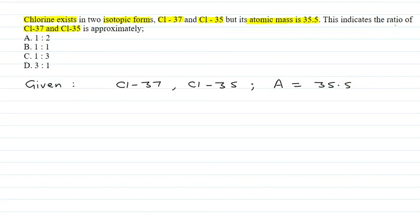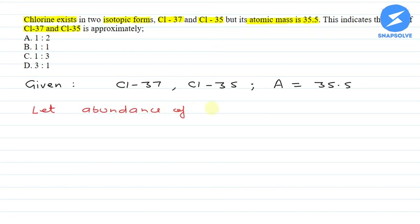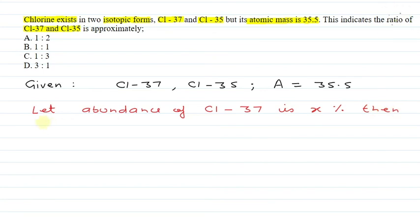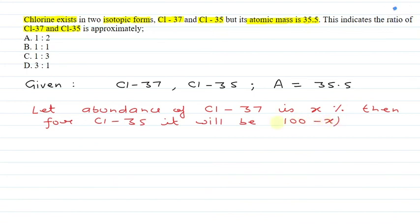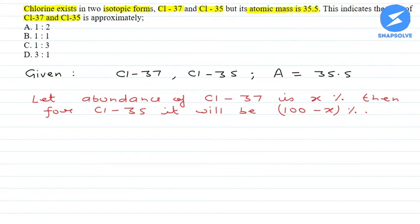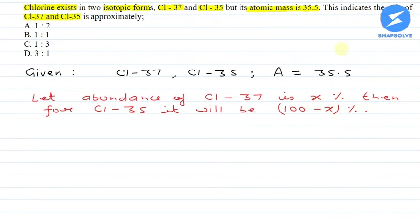हमें बताना है कि इनका ratio क्या होगा। सबसे पहले हम assume करते हैं — let the abundance of Cl-37 be x percent. Then for Cl-35, it will be (100 minus x) percent, क्योंकि total percentage का sum 100 ही आ सकता है।